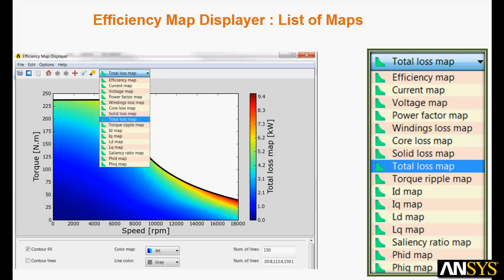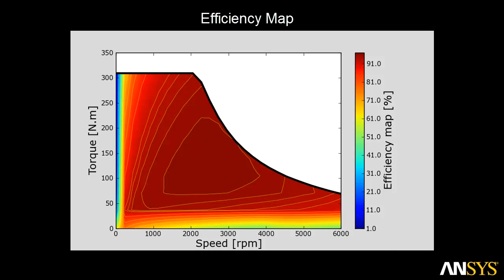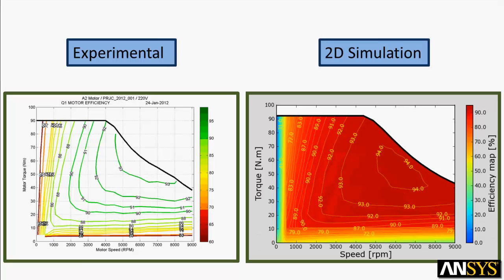An intuitive displayer is included with the design kit. A simple pull-down menu provides you immediate access to many maps including efficiency, current, voltage, power factor, core loss, and many others. Here you see a Maxwell 2D simulation of the Toyota Prius motor. We have used the toolkit to calculate the efficiency map. Simulation results show excellent agreement with measurements. The motor was simulated using the same maximum current and voltage limit as was used in the measurements. Each operation point was simulated in the time domain to obtain the efficiency map using frequency-dependent core loss coefficients.